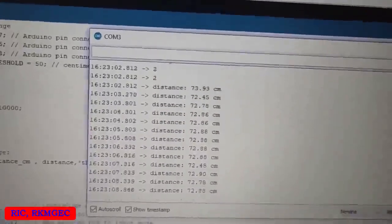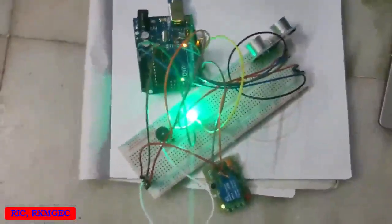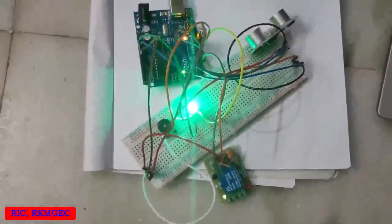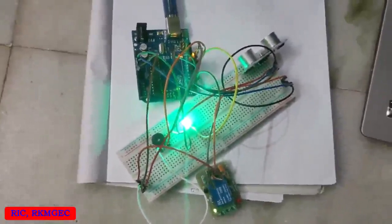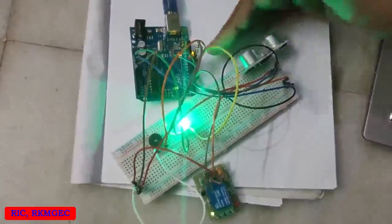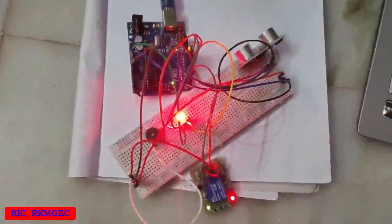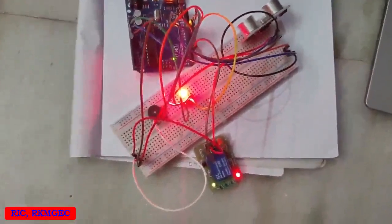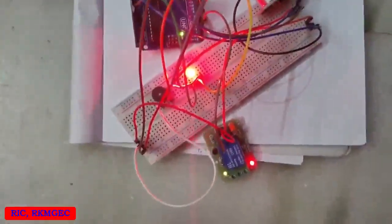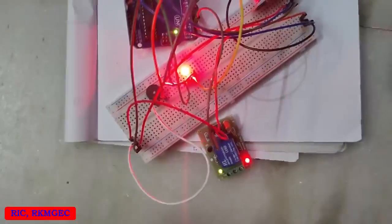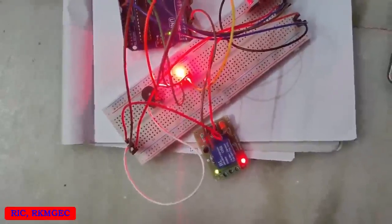We can see the distance. So let's see whether all the features are working properly or not. Now I'm bringing my hand close to the sensor and it's beeping. That means it's working. We can see the relay is turned on. The red light is indicating this. The relay is switched on.